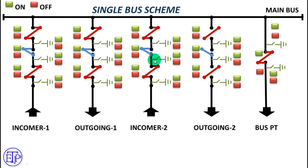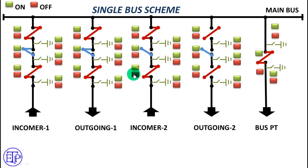Now suppose we have to take this breaker into maintenance. How will the isolator be operated? First we have to open this circuit breaker, because this incomer is now carrying current — so I cannot open this isolator directly. I have to first open this circuit breaker. Pressing the red button, the circuit breaker is opened. Since the circuit breaker has opened, this path is not carrying any more current. Now we can open this isolator, thus isolating this incomer. For the bus PT, if I need to take it into maintenance, I can just open this isolator because the bus PT draws only a very small magnetizing current which can be broken by the isolator.